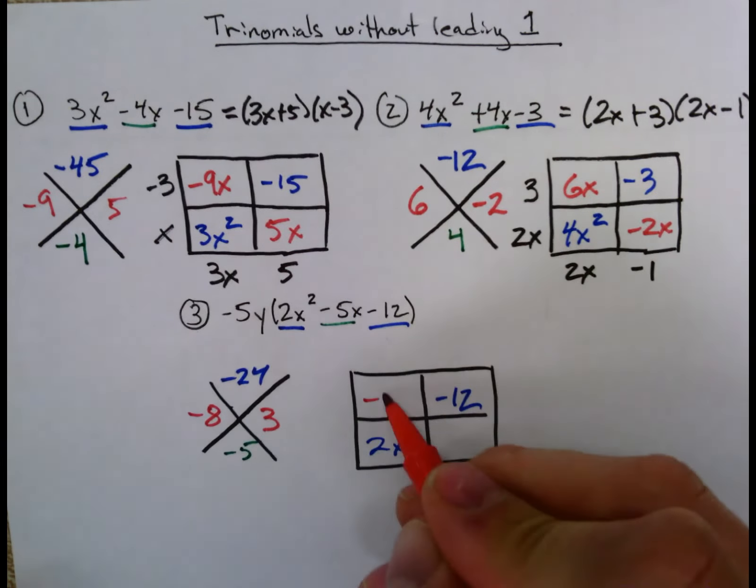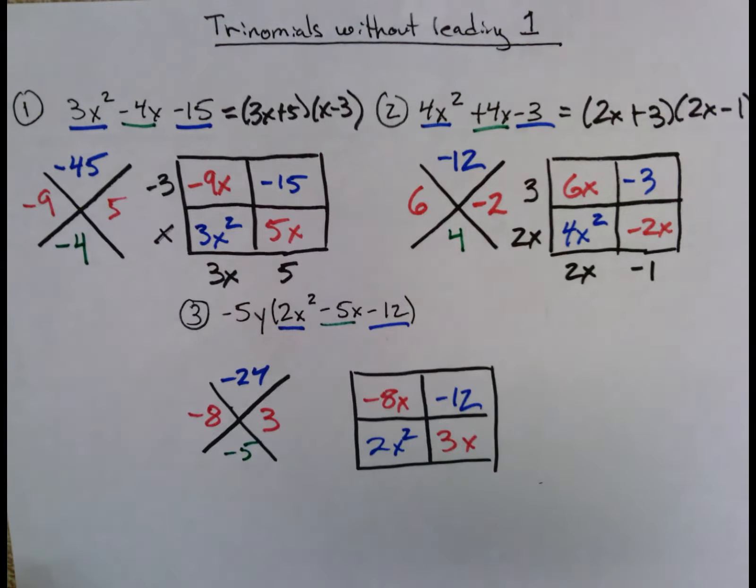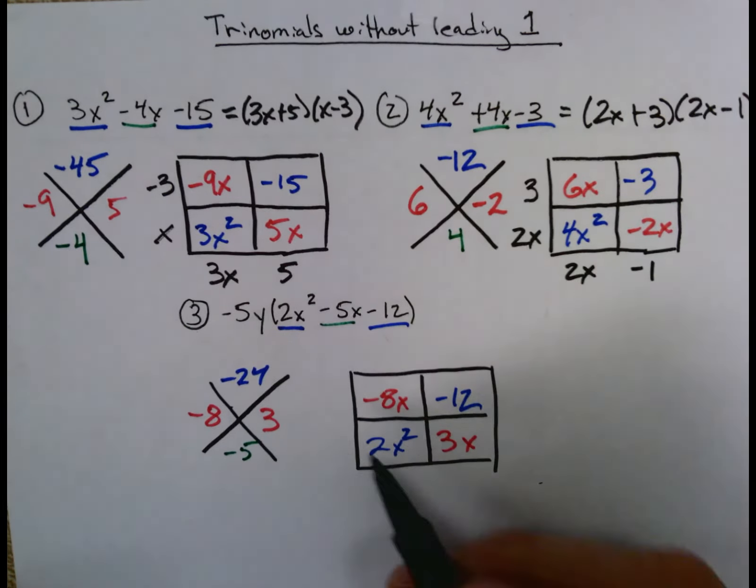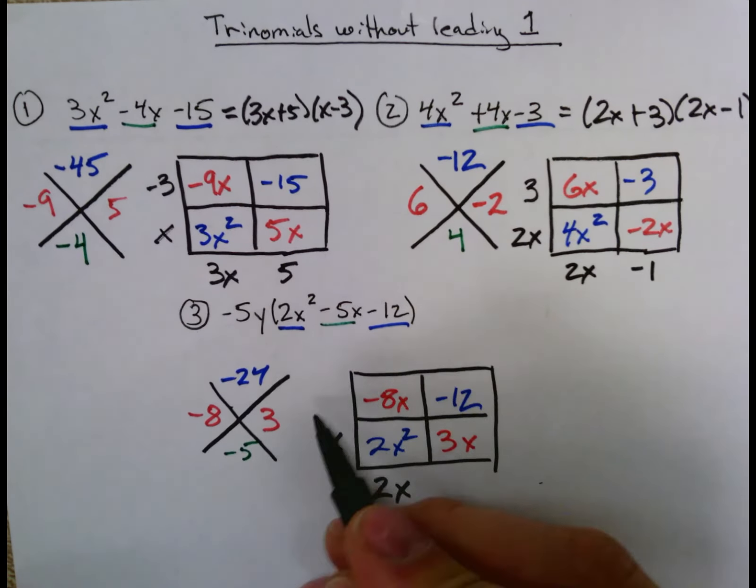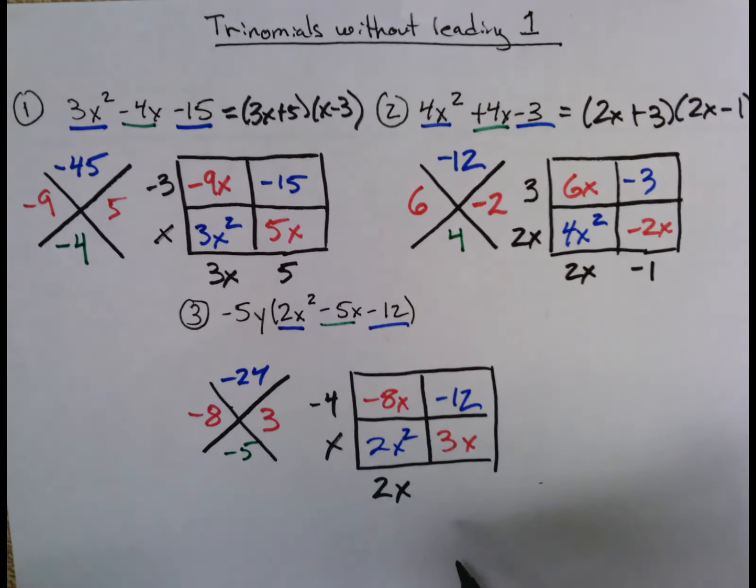So -8x, positive 3x. And you have to find out what your dimensions are by just factoring out from each side. So this has an x, this is a 2x, makes this a -4.